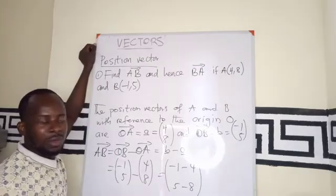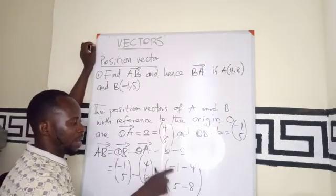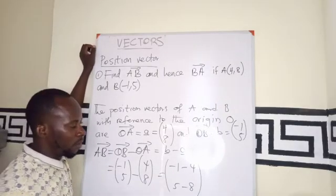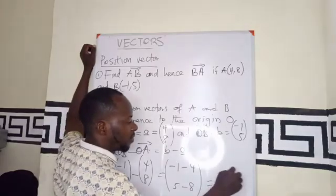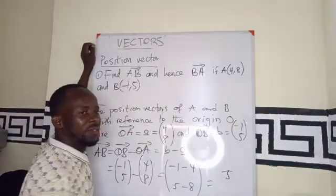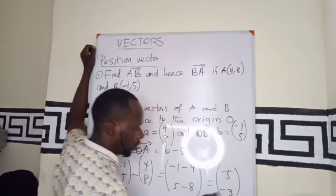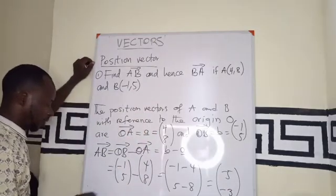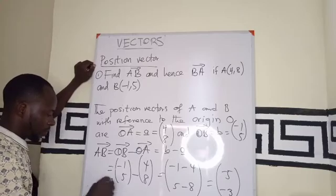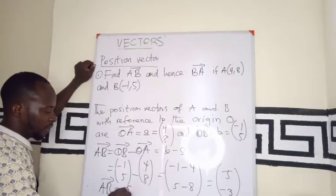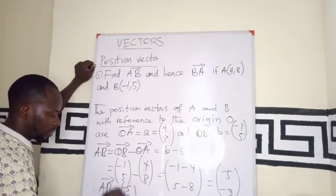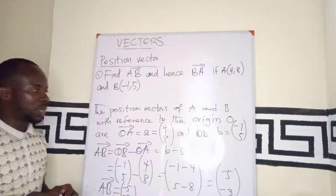So from here, we can say that -1 minus 4 will also give us -5, then 5 minus 8 will give us -3. So we can say that, therefore, vector AB is giving us (-5, -3).